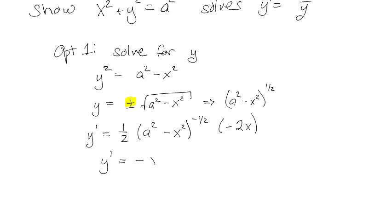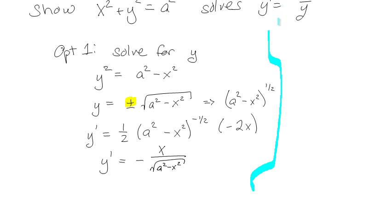We can simplify that to −x over the square root of (a² − x²). Beautiful — got it? Great. So now I'm going to show that it actually solves the equation over here.